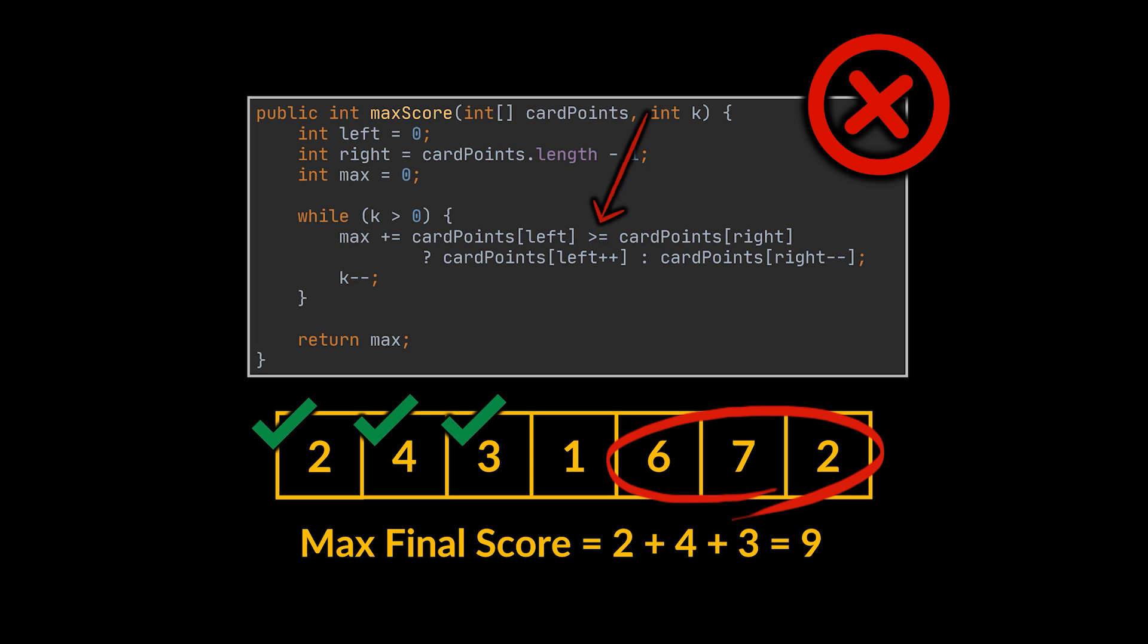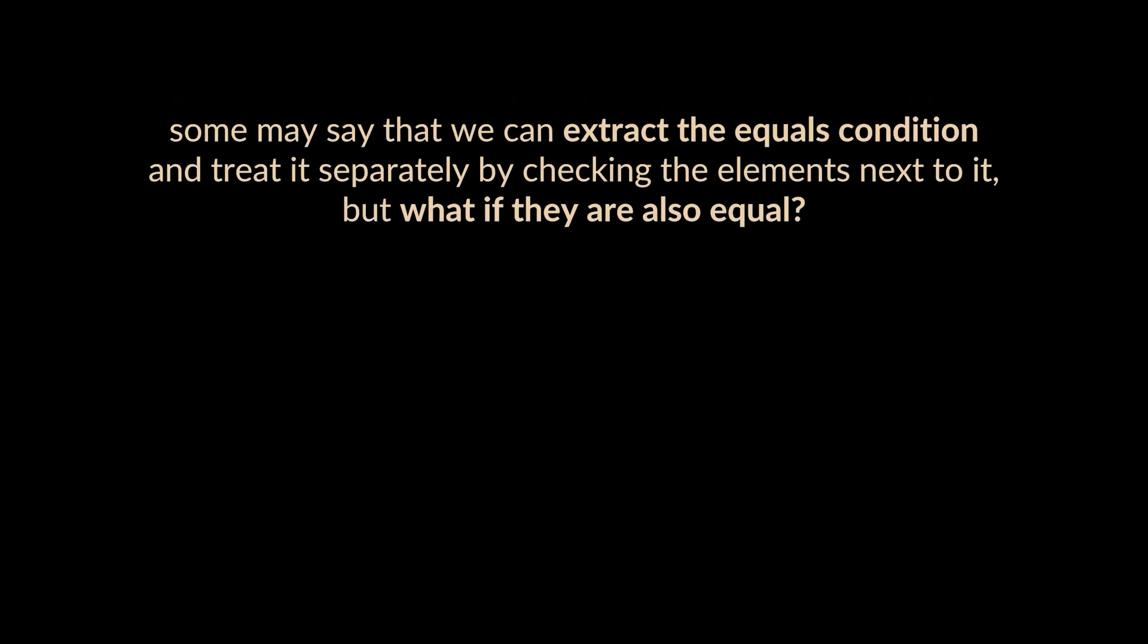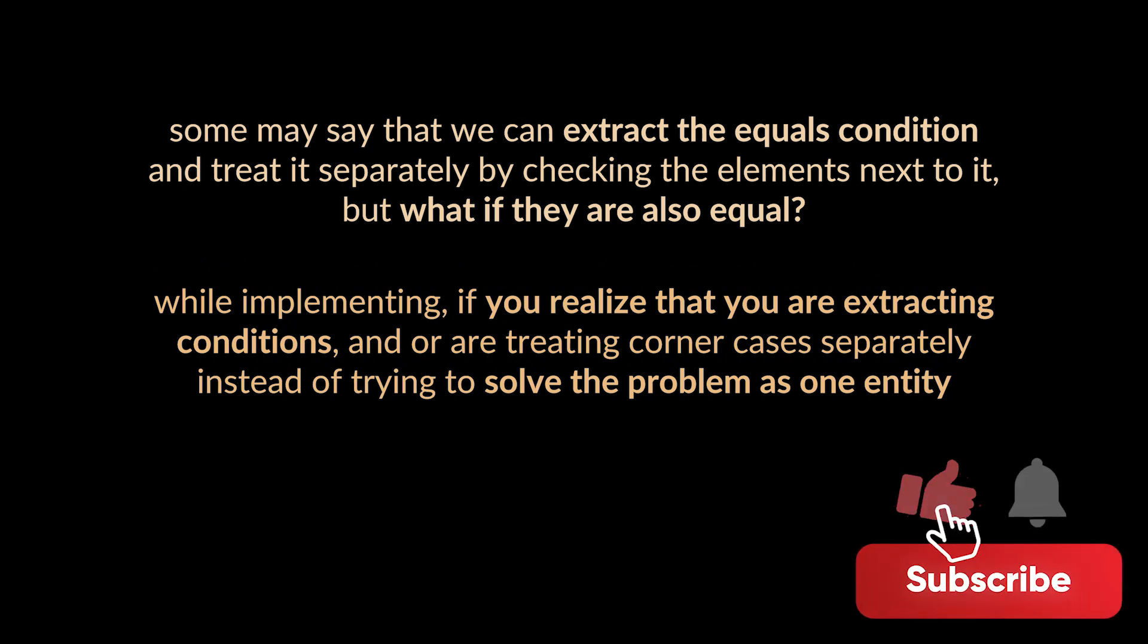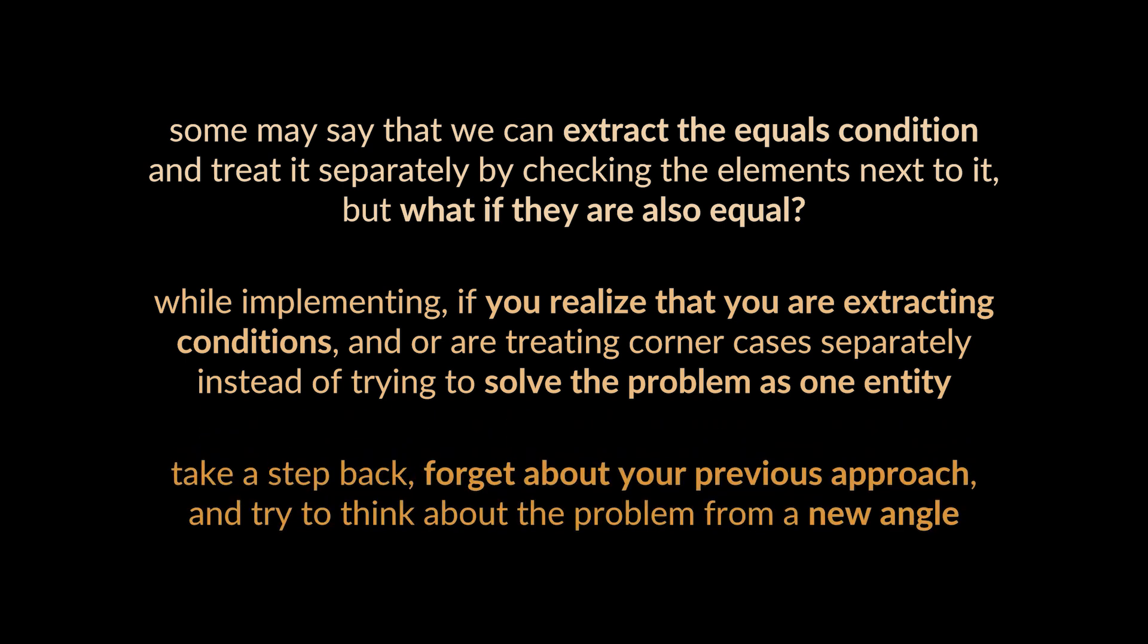So how do we solve this? Some may say that we can extract the equals condition and treat it separately by checking the elements next to it. But what if they are also equal? When does it end? Do we use recursion? Small tip here: while implementing a solution, if you realize that you are extracting conditions and treating corner cases separately instead of trying to solve the problem as one entity, then take a step back, forget about your previous approach, and try to think about the problem from a new angle.